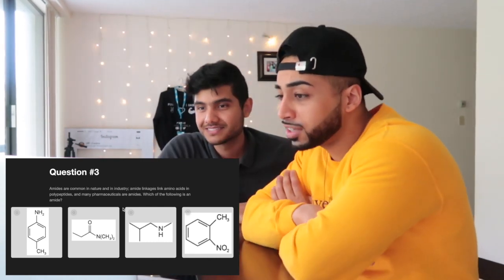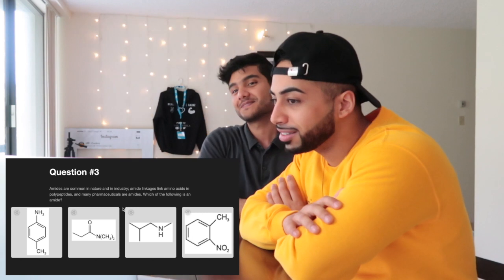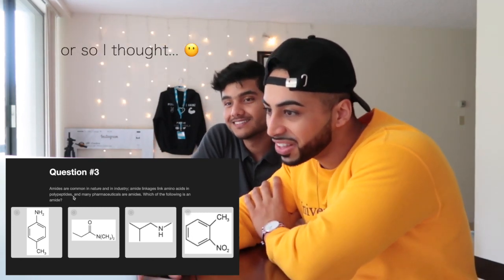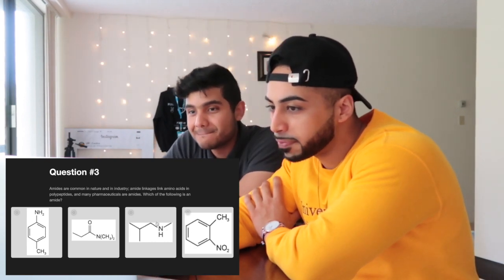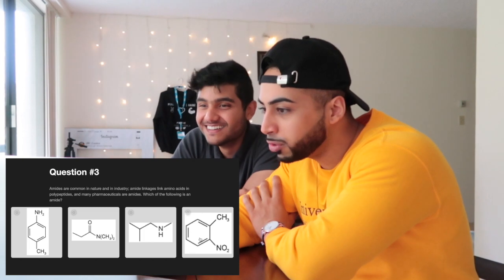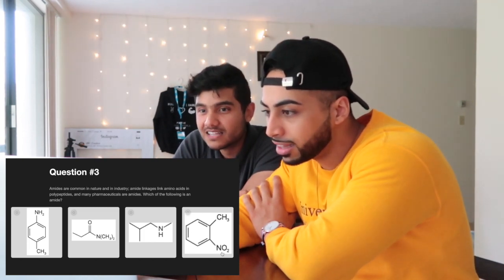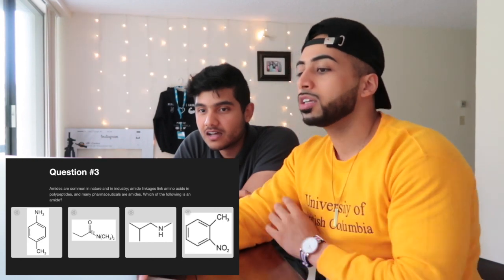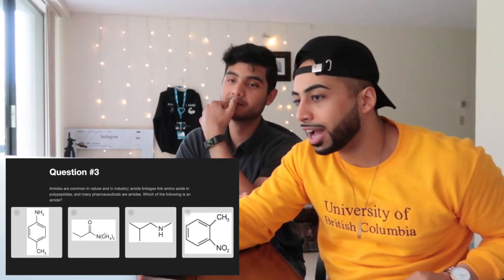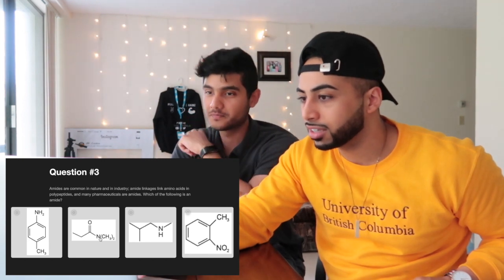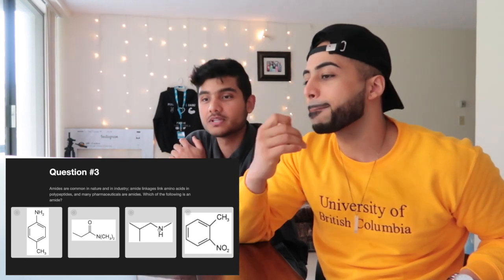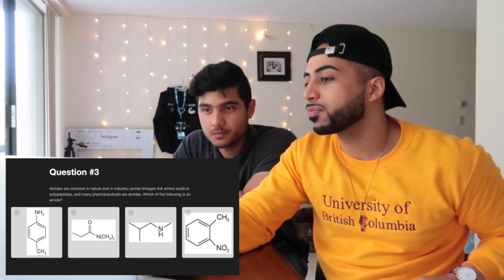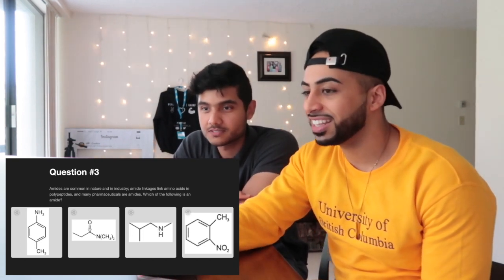Question three: which of the following is an amide? Sahil notes his chemistry minor should help here. An amide is basically like a carboxylic acid group — a carbonyl oxygen attached to a nitrogen, not NO2. They confirm it's a secondary amide because it has two carbons coming out of the nitrogen, distinguishing it from an amine. They go with that option confidently.